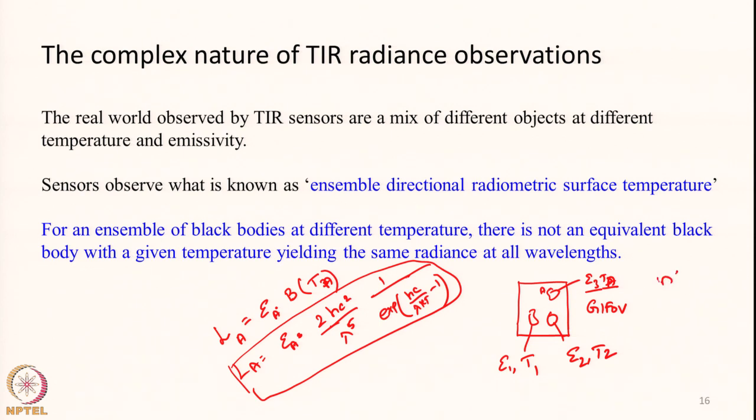There can be n objects within a given GIFOV, each subtended by the sensor's solid angle covering a small ground area. Each has its own radiance computed using emissivity and Planck's function, and each occupies its own small aerial fraction. A building might occupy 2% of the GIFOV, a water body 15%, and so on. Based on how much area each covers, all radiances are averaged together and the sensor sees an averaged radiance of all features.